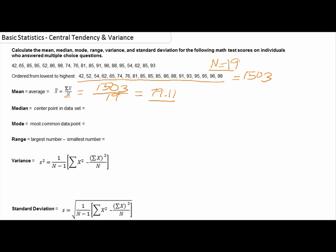The next measure of central tendency we want to calculate would be our median. Our median is the center point in our data set, the very center of all of the points that we have. We can calculate this by looking at the number of items we have in our data set. In this case we had 19 that we've already listed up here at the top. So our n is 19, which is an odd number.